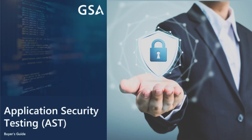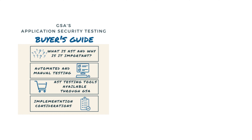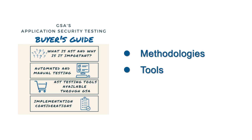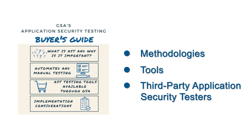To help, GSA has created an Application Security Testing Buyer's Guide. The guide details key considerations when implementing an AST program and serves as an educational resource in selecting methodologies, tools, and third-party application security testers.